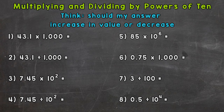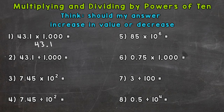Let's jump right into number 1, where we have 43 and 1 tenth times 1,000. I'm going to rewrite my 43 and 1 tenth underneath here so I can move the decimal and have enough room. So when working with powers of 10, if it's written in standard form, you count the number of zeros. We have 1,000 here, which has 3 zeros, so that means we move the decimal three times.